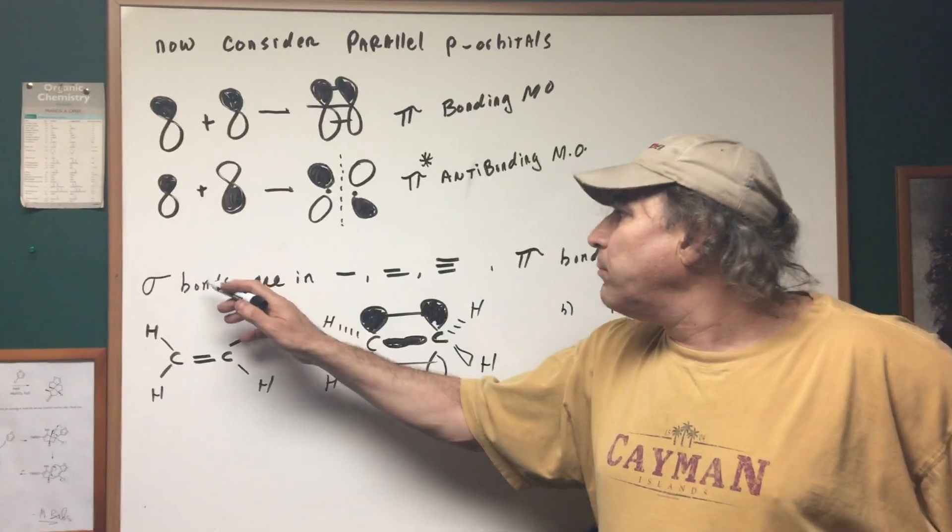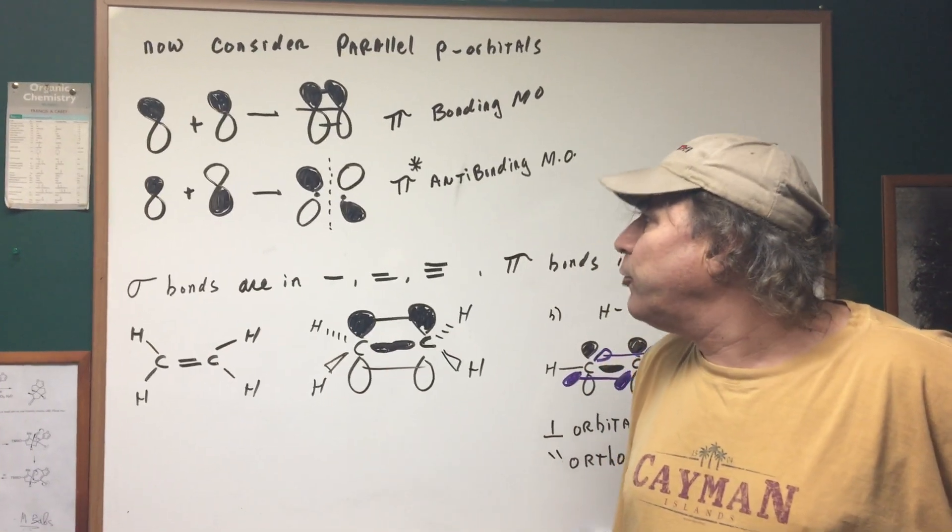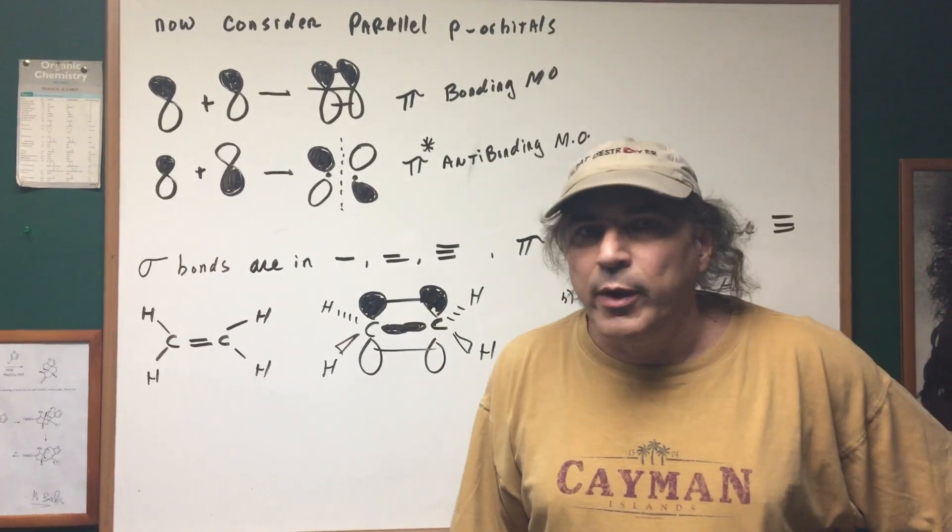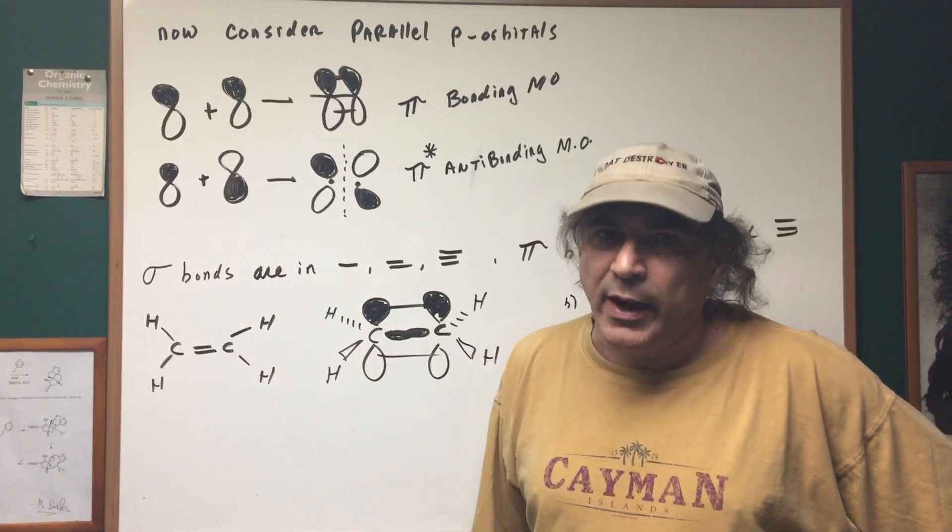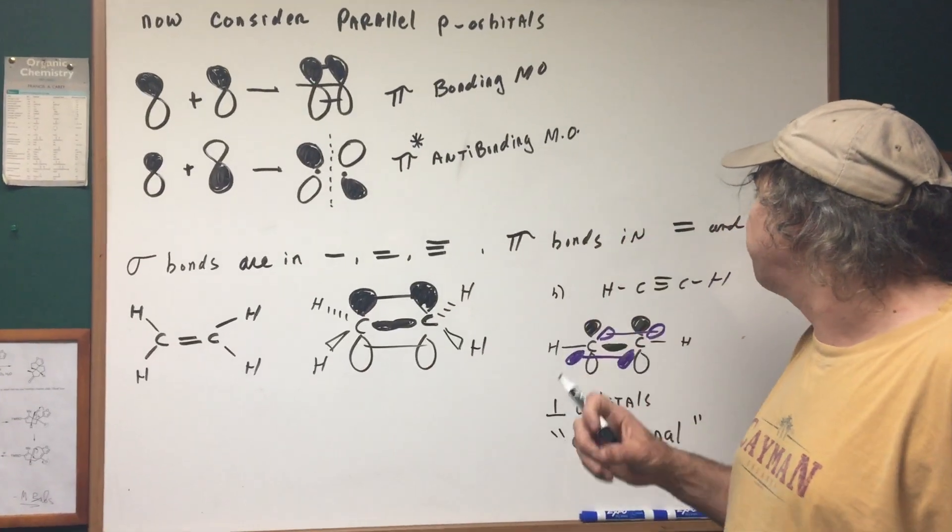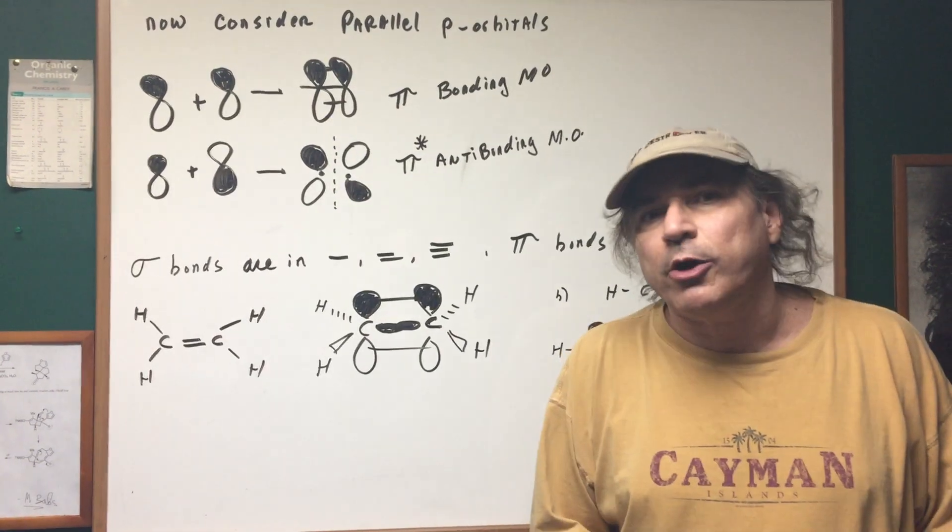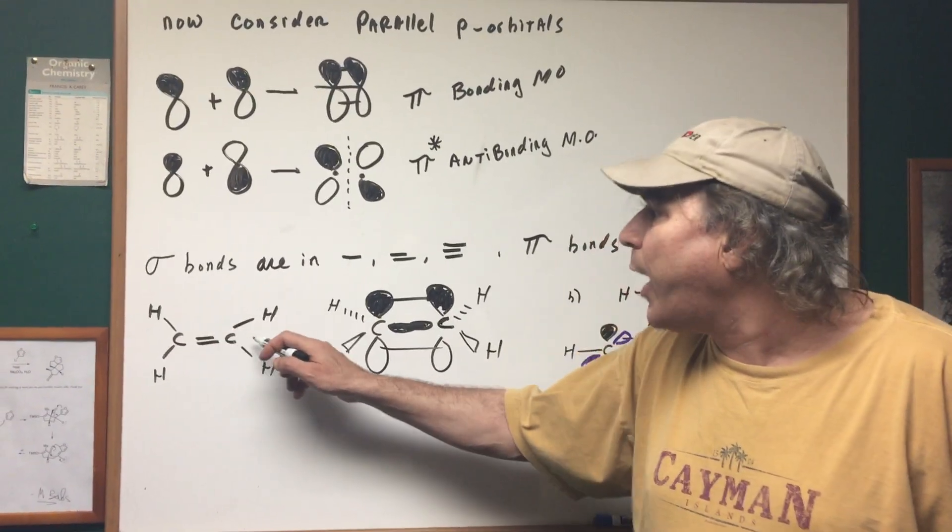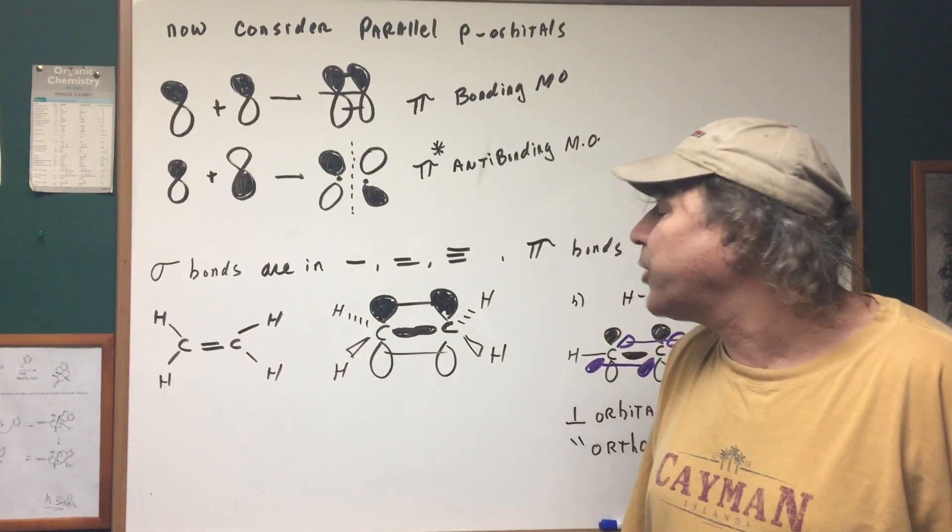Now the bottom line is this: whenever you form a single, a double or a triple bond we're going to form these things called sigma bonds. So all bonds contain a sigma. A pi bond is formed if you have a double or a triple bond. So for example if I wanted to look at the pi bonds and we're just going to look at the carbons...